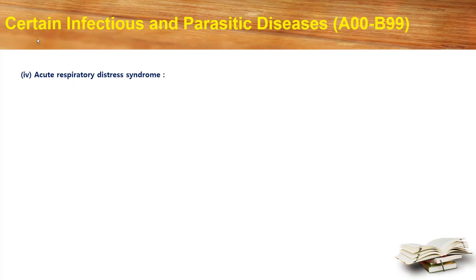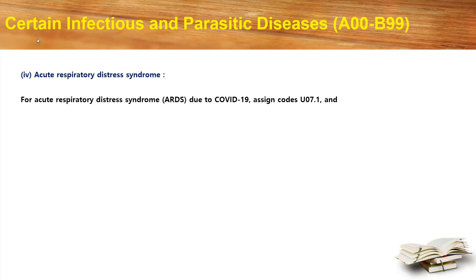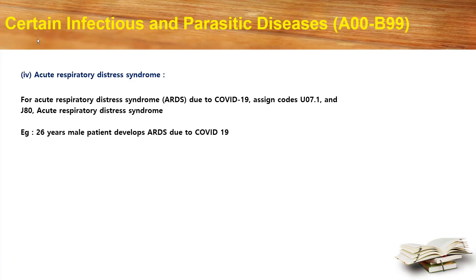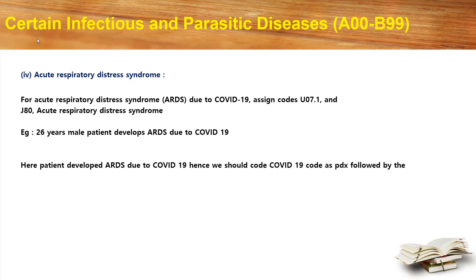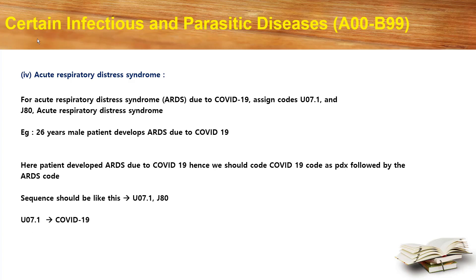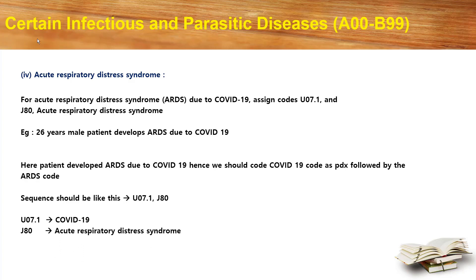Let's move into acute respiratory distress syndrome. For acute respiratory distress syndrome due to COVID-19, assign codes U07.1 and J80, acute respiratory distress syndrome. Example: a 26-year-old male patient develops ARDS due to COVID-19. Hence we should code COVID-19 as primary diagnosis followed by the ARDS code. The sequence would be U07.1 and J80. U07.1 is COVID-19 and J80 is acute respiratory distress syndrome.